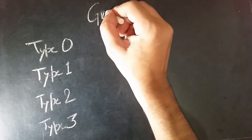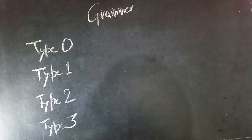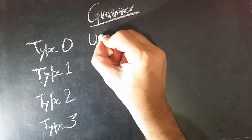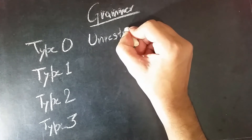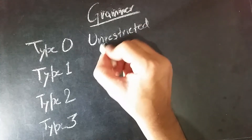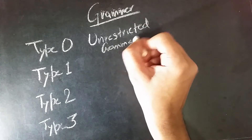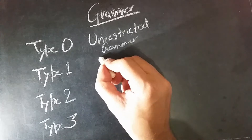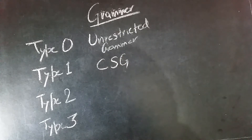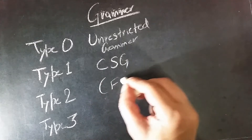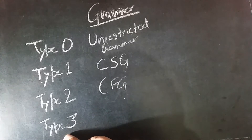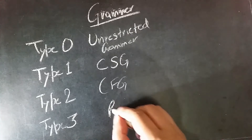The difference between them is on the basis of grammar accepted, language accepted, and the corresponding automata. The grammar accepted by type 0 is unrestricted grammar, type 1 is context sensitive grammar, type 2 is context free grammar, and the most restrictive of them all, type 3, is regular grammar.